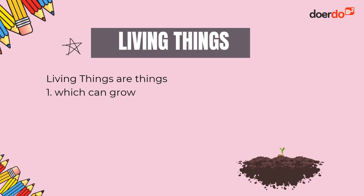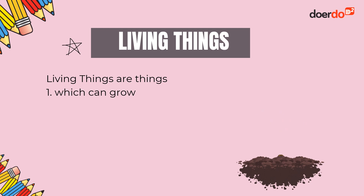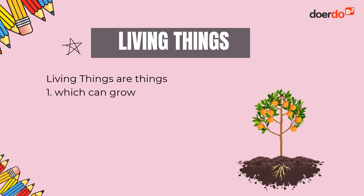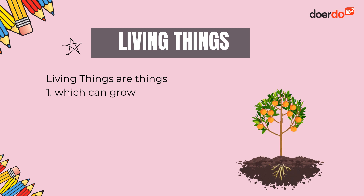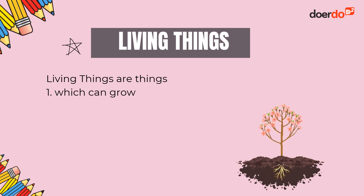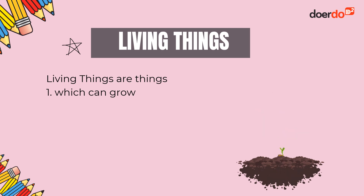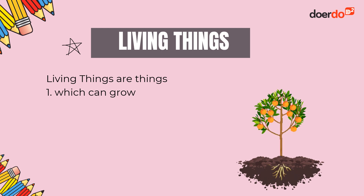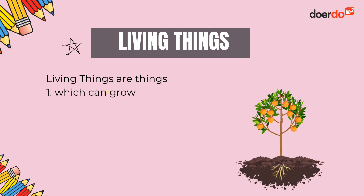Firstly, living things can grow. Plants are living things because they can grow — starting from a seed to a seedling, slowly growing bigger and bigger into a plant. Similarly, a baby will grow bigger and bigger, then become an adult, and continue to grow older and older into an elderly person.